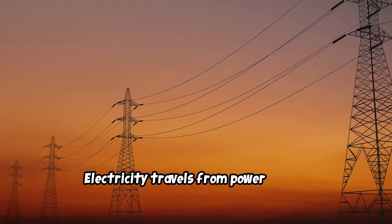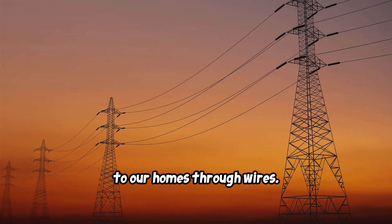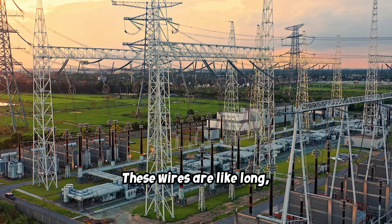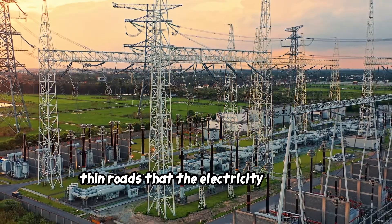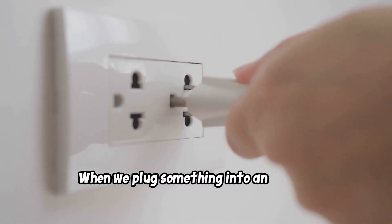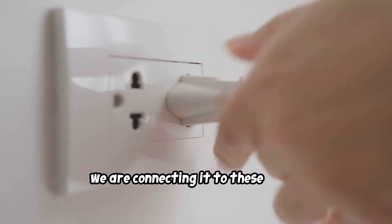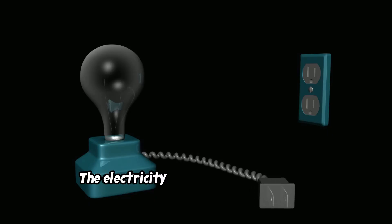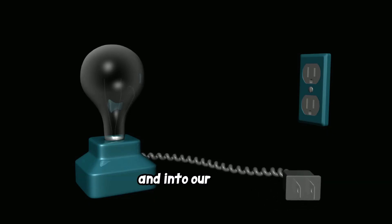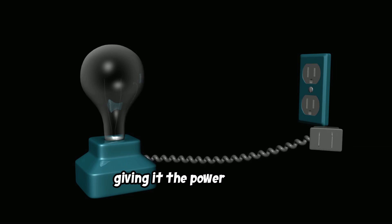Electricity travels from power plants to our homes through wires. These wires are like long, thin roads that the electricity follows. When we plug something into an outlet, we are connecting it to these wires. The electricity flows through the wires and into our device, giving it the power to work.